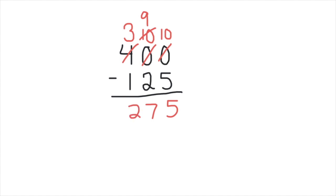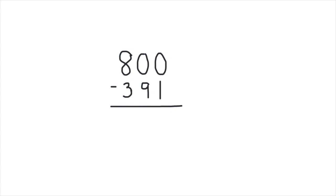Let's try another problem. We have two zeros in 800, so we are going to need to borrow from our hundreds place. So we cannot do 0 minus 1. There is nothing to borrow in the tens place, so we need to borrow from our hundreds place.